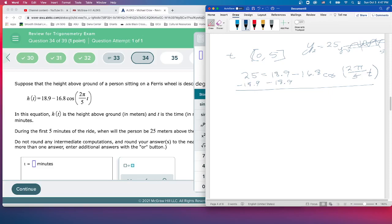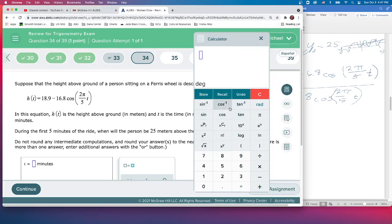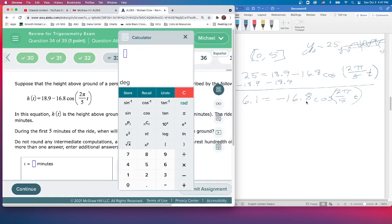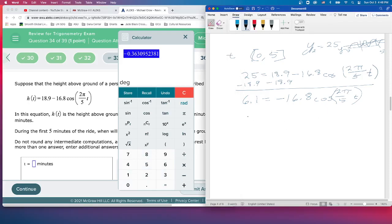So 25 minus 18.9, that would be 5, 6, 6.1, minus 16.8, cosine of 2 pi over 5 T. And we could kind of figure period and frequency, that kind of stuff. How many minutes is going to go? What do we need to do here? Give some a little bit more room. So we're going to need to divide by negative 16.8. So we take 6.1 divided by negative 16.8. So we get negative 0.363.